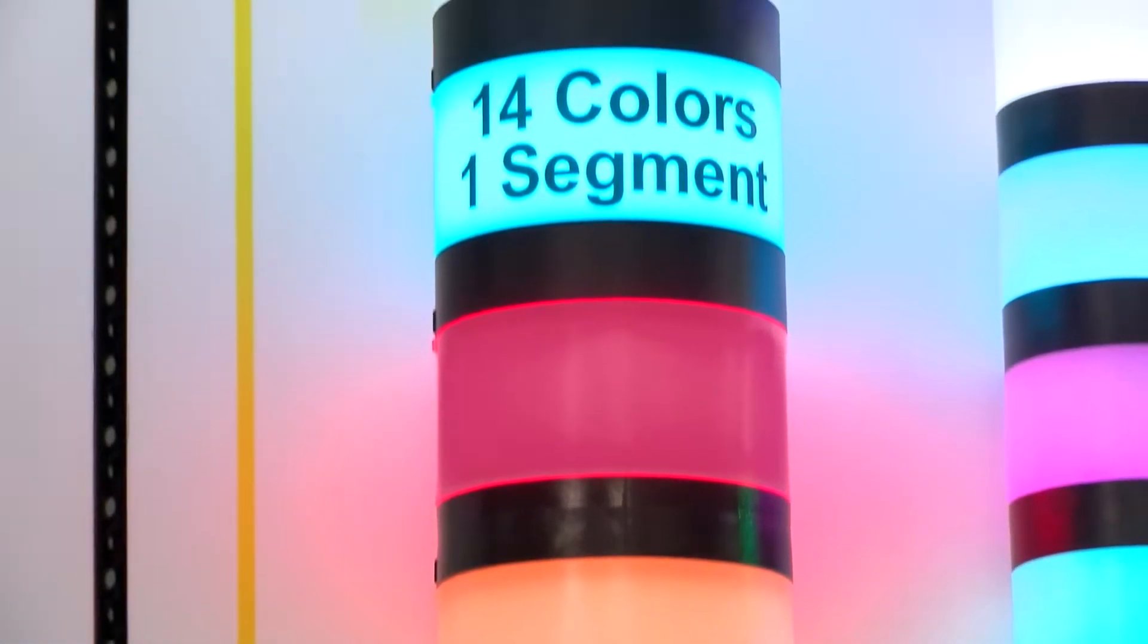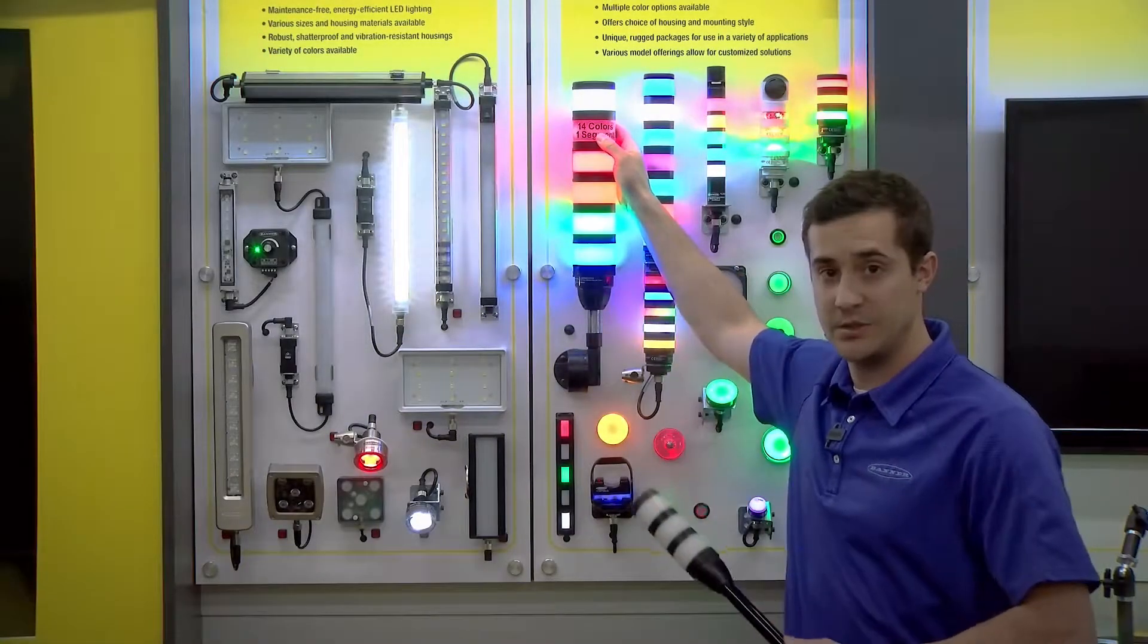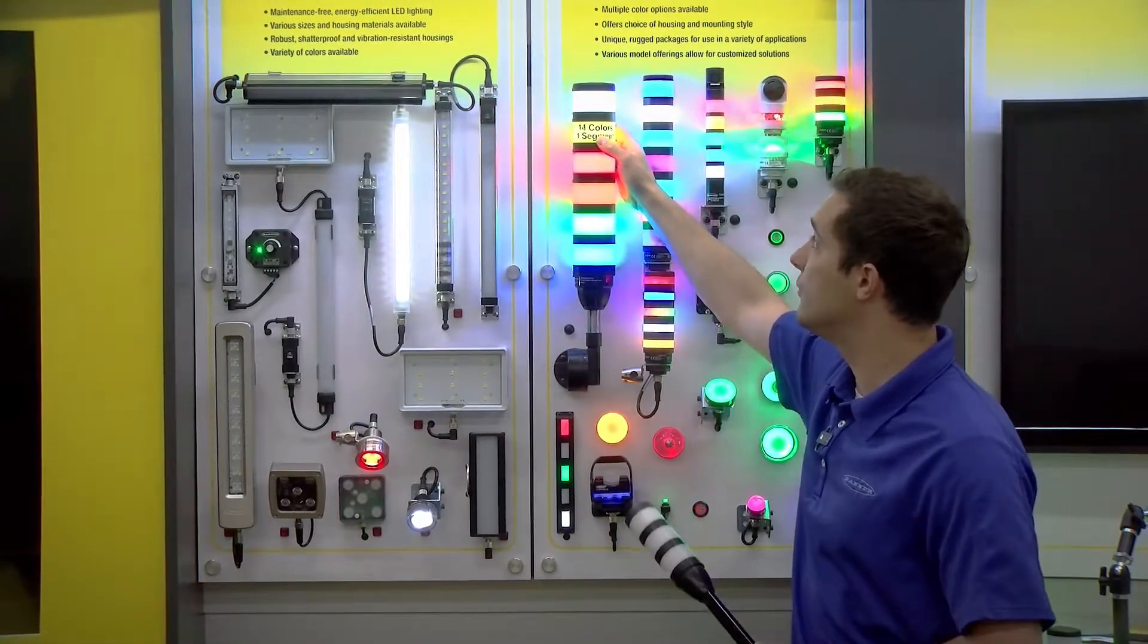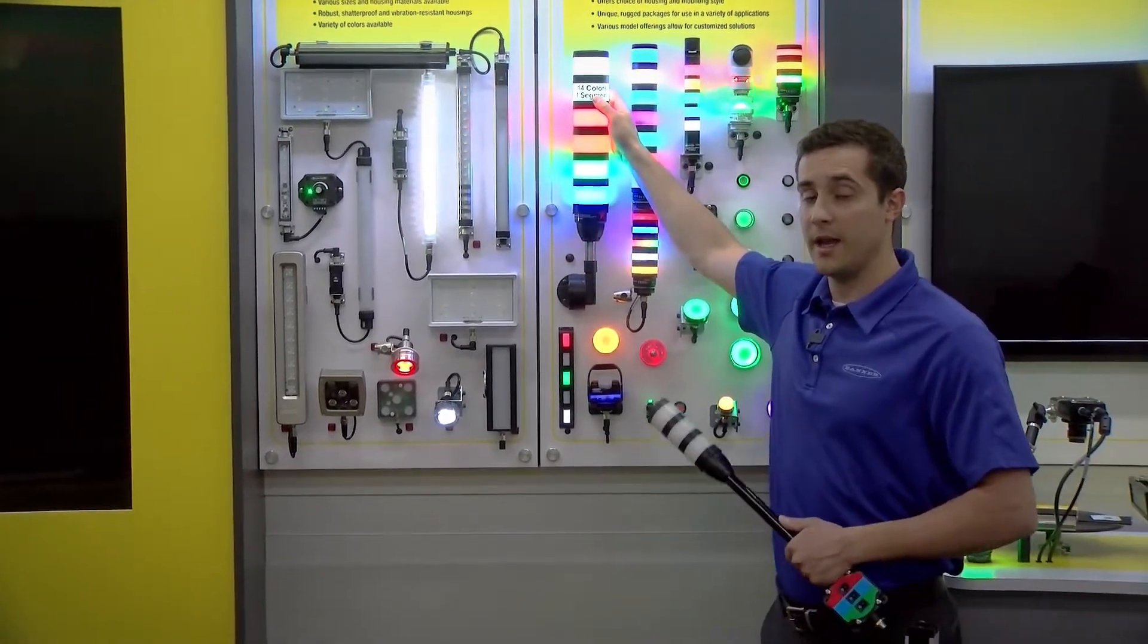Now you'll see that this segment up here says 14 colors in one segment. That's very powerful because you can use dip switches to control up to 14 colors. You can even choose intensities and animations.